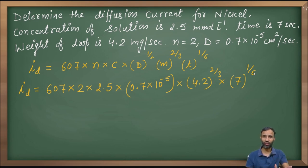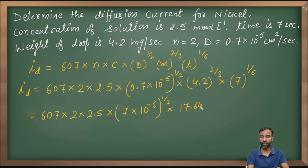Now, this is just the solution. 607 into 2 into 2.5 into 7 into 10 raised to power minus 6, raised to power 1 by 2 into 4.2 raised to power 2. So, 4.2 raised to power 2, the value comes out to be 17.64 raised to power 1 by 3, and 7 raised to power 1 by 6, its value is 1.383.